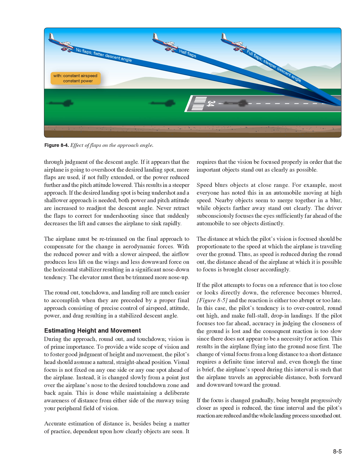Estimating Height and Movement. During the approach, roundout, and touchdown, vision is of prime importance. To provide a wide scope of vision and foster good judgment of height and movement, the pilot's head should assume a natural, straight-ahead position. Visual focus is not fixed on any one spot ahead of the airplane; instead, it is changed slowly from a point just over the airplane's nose to the desired touchdown zone and back again, while maintaining awareness of distance from either side of the runway using peripheral vision. Accurate estimation of distance depends on how clearly objects are seen.